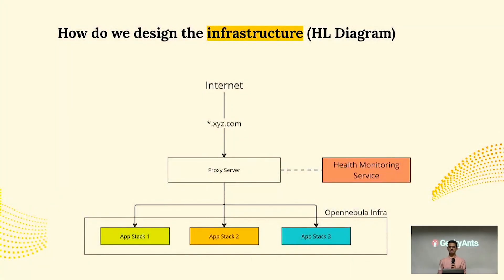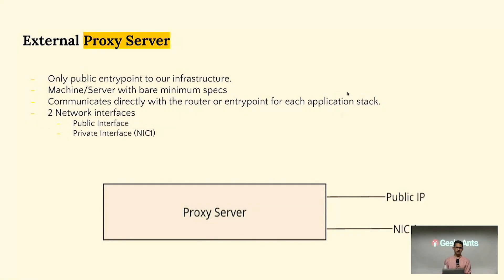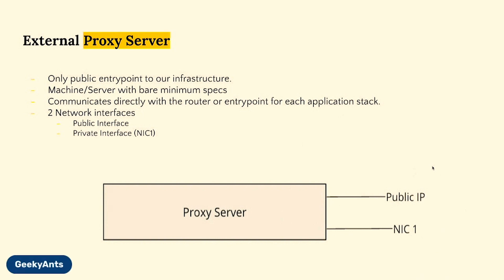Now the main part of the talk — how did we design the basic infrastructure? At a high level, we have an internet-facing proxy server through which all communication for application stacks inside the Open Nebula infrastructure is routed. This proxy server uses a wildcard domain mapping with a DNS provider. There is also a health monitoring service, which is a USP of this architecture — I'll discuss that in detail later.